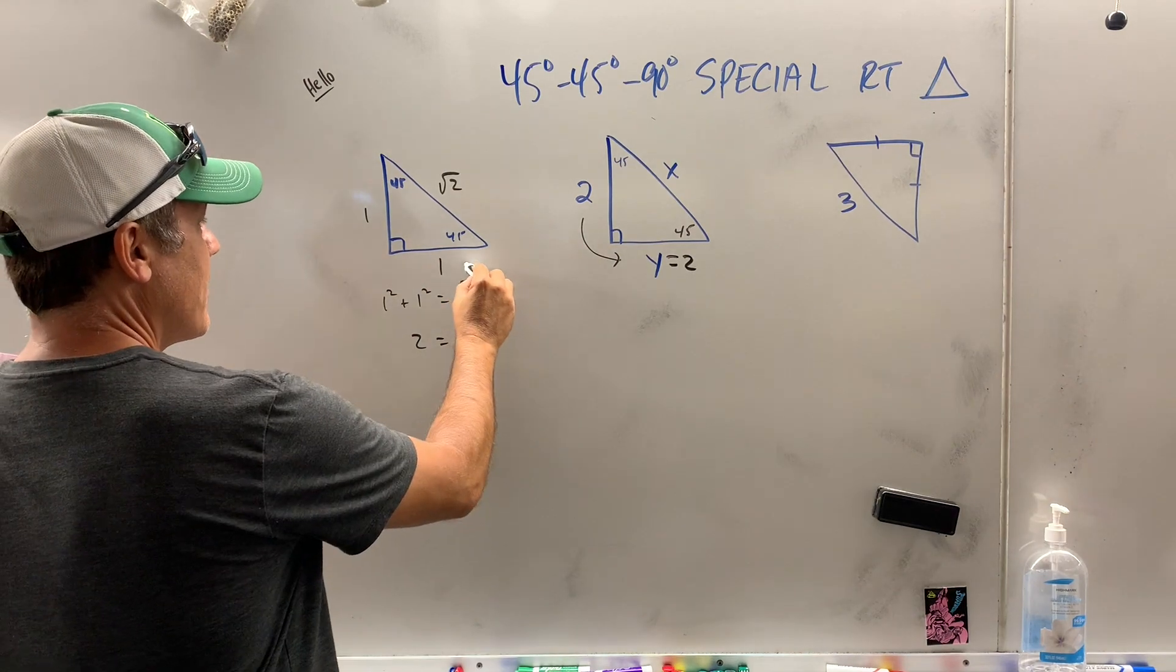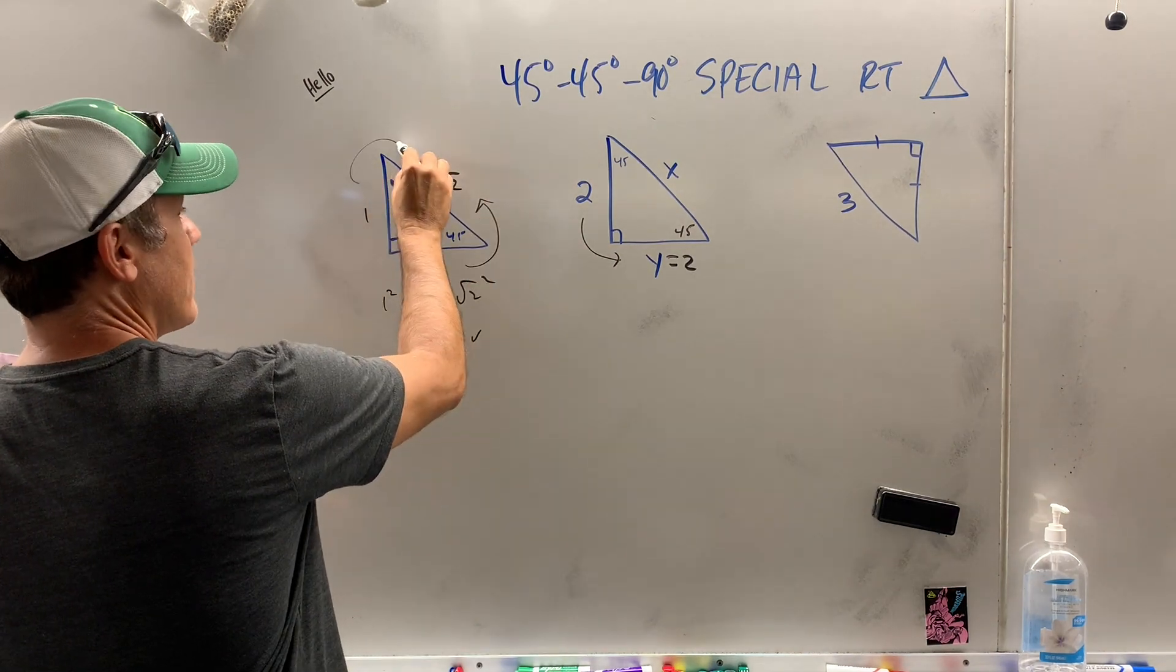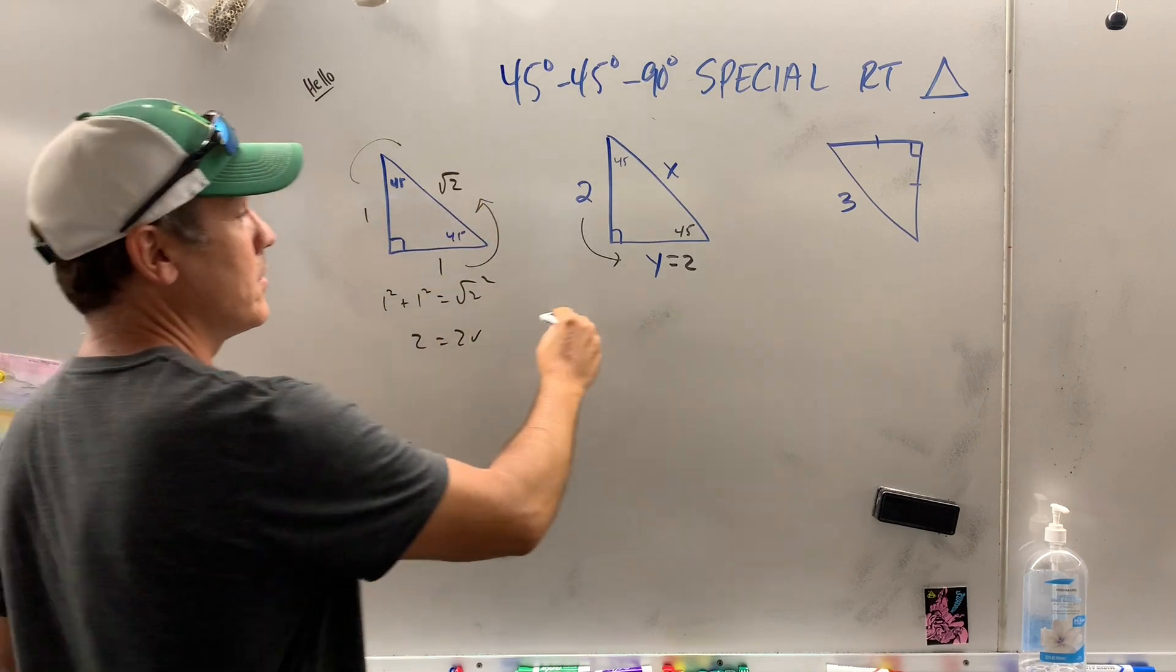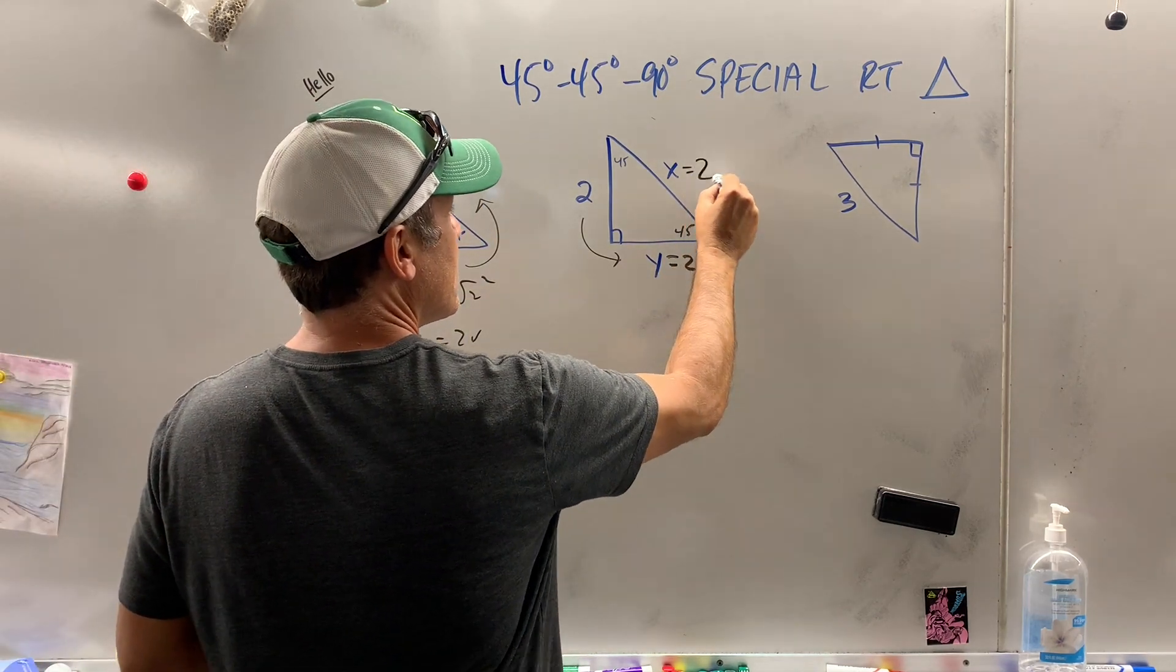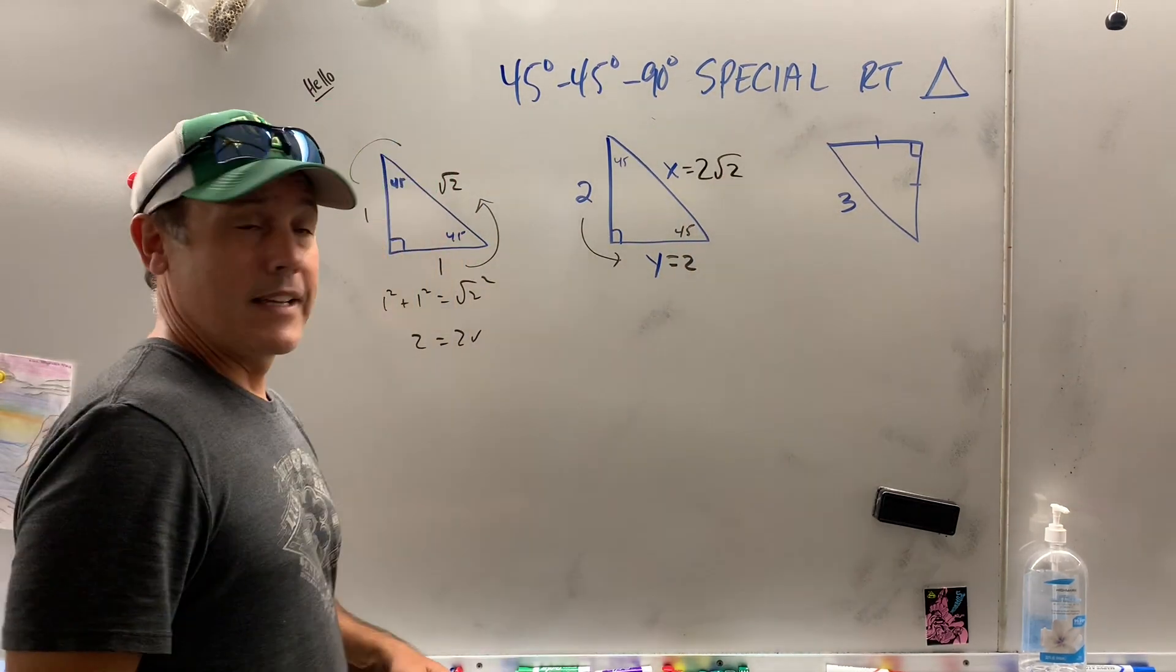Pretty easy. And then how do I go from here to here or here to there? It doesn't matter. I simply multiply by radical 2. So what is x? 2 radical 2. It's pretty simple.